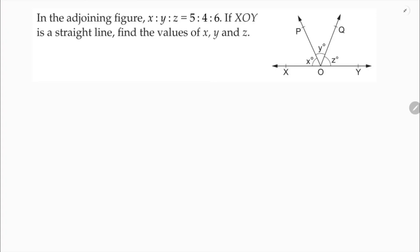In the adjoining figure, x is to y is to z is 5 is to 4 is to 6. XOY is a straight line. Find the values of x, y, and z. Since XOY is a straight line, the three angles — angle XOP, plus POQ, and QOY — sum to 180 degrees, because a straight angle is 180 degrees.